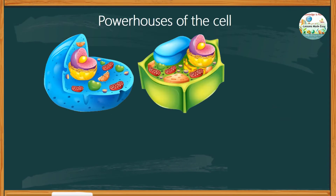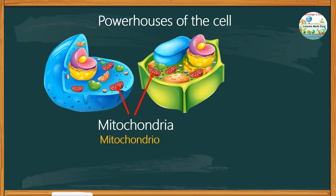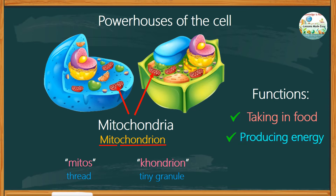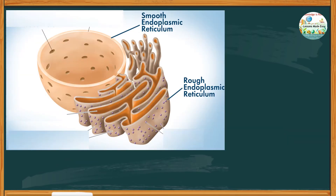The mitochondria are known as the powerhouses of the cell. A mitochondrion is the singular form of mitochondria, and it derives from Greek roots — mitos meaning thread and chondrion meaning tiny granule. This organelle has an extremely specialized function: its main job is taking in food and producing energy. This is precisely why it's called the powerhouse of the cell.